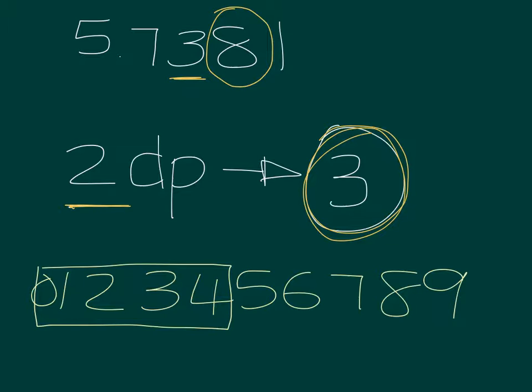But from 5, 6, 7, 8, and 9 - from 5 until 9 - they are powerful numbers. They can make a change. So if we go back to our example, we've underlined 3 and we've circled the number next, which is 8.